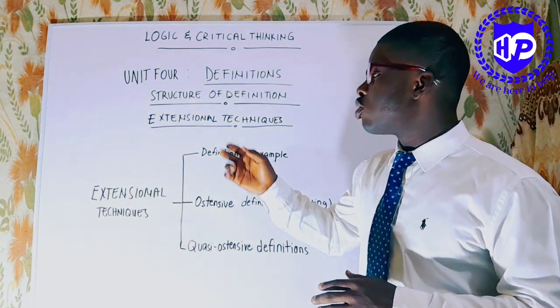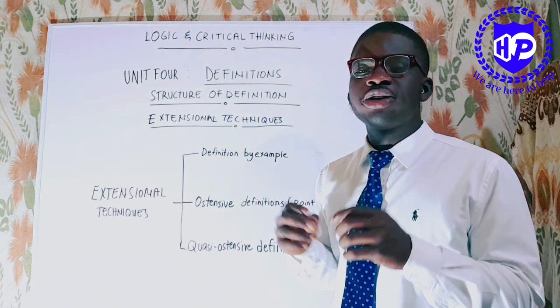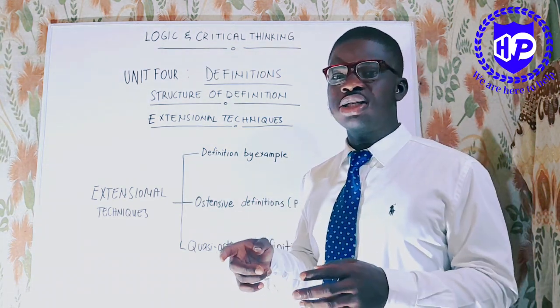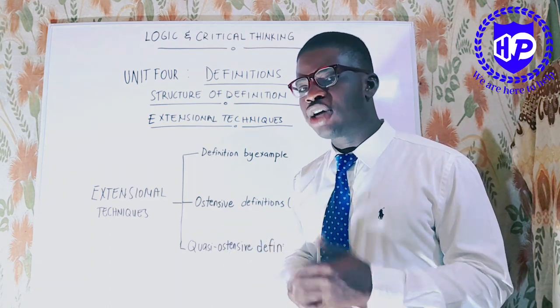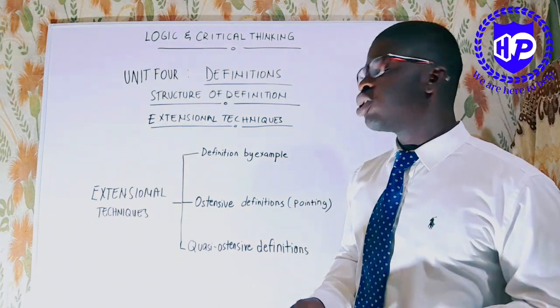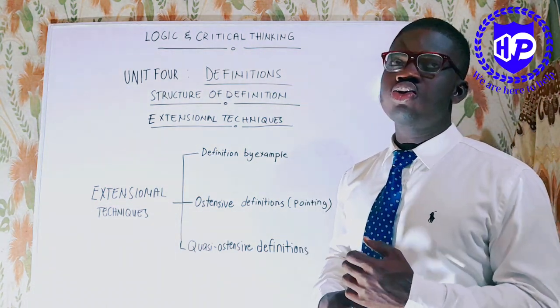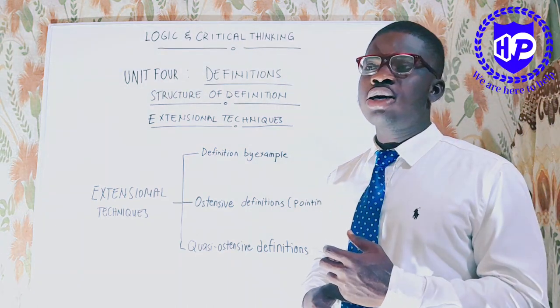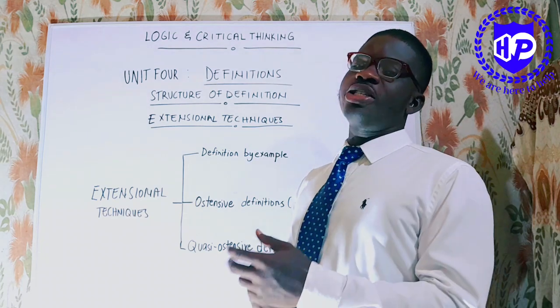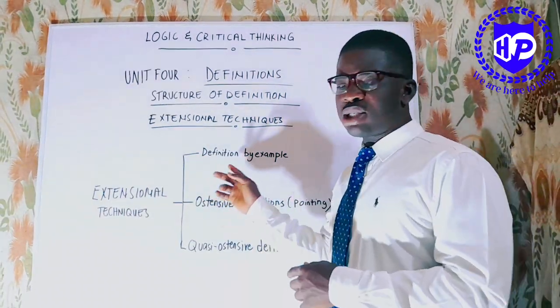Now we'll remember that the extension refers to all and only those objects which possess the set of attributes which the general term refers to. To identify the extension or to define the extension, there are three techniques we use. The first is by example.